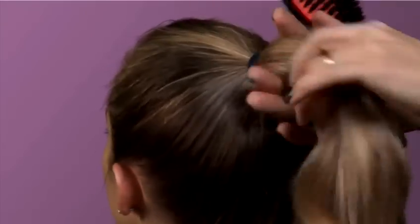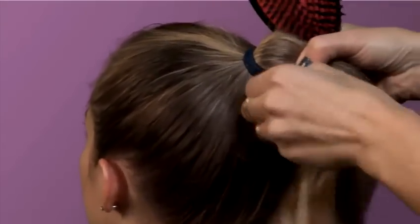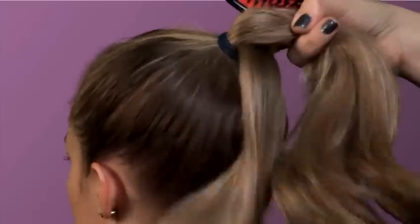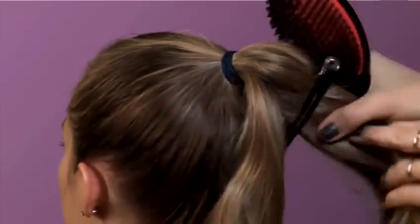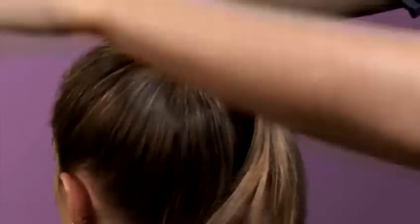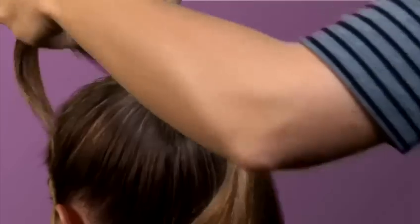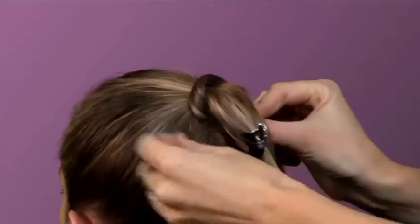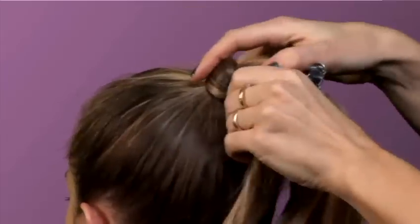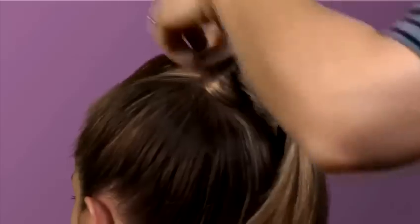Now, using hair from underneath, we will wrap the hair around the hairband, hiding the headband completely and creating a catwalk effect ponytail.